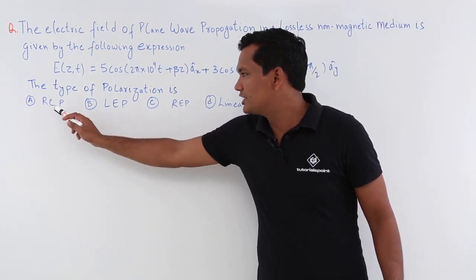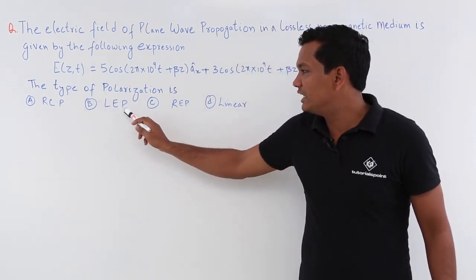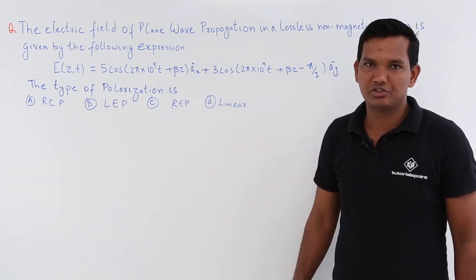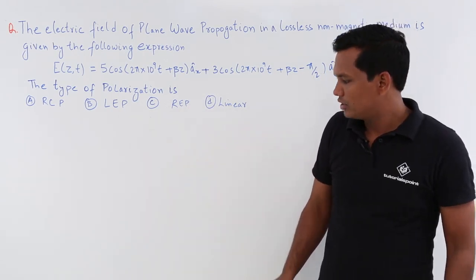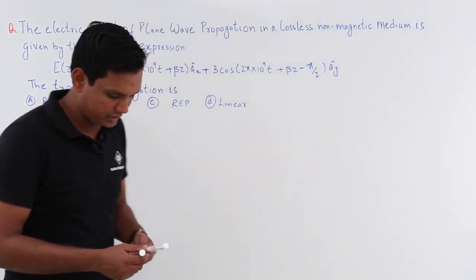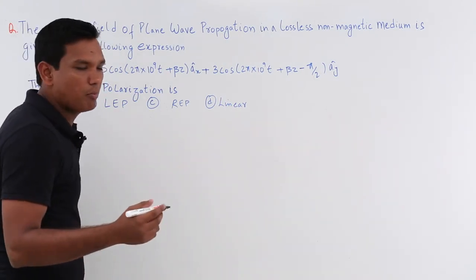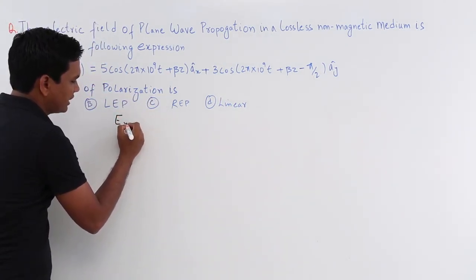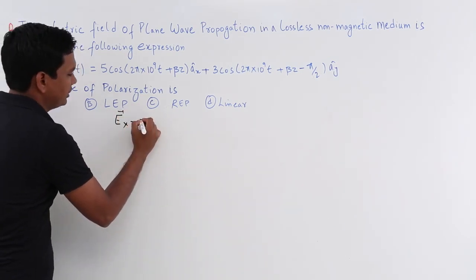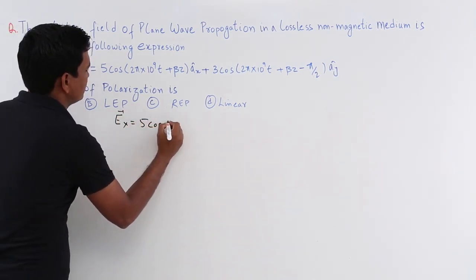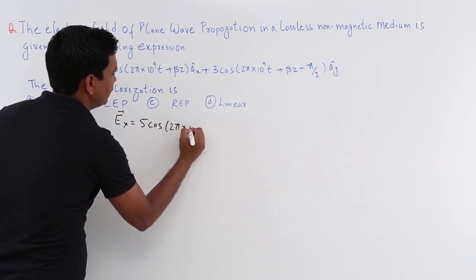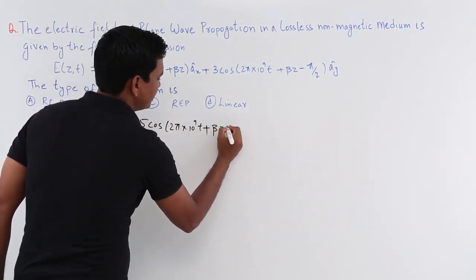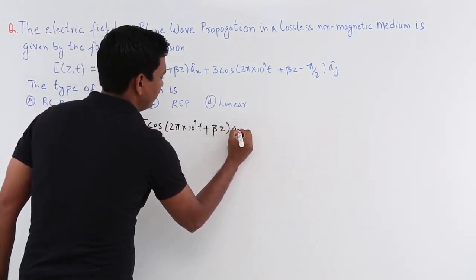The options are: right circular polarization, left elliptical polarization, right elliptical polarization, and linear polarization. What I am going to do is, in order to solve this, I am going to write and break the components. The Ex component will be nothing but 5 cos(2π × 10⁹ t + βz) Ax cap.